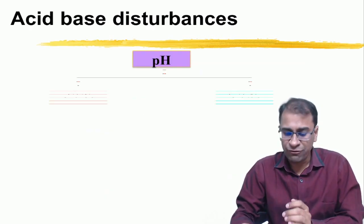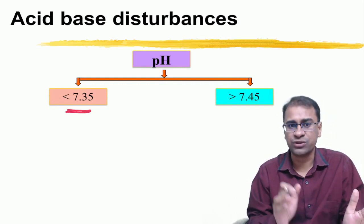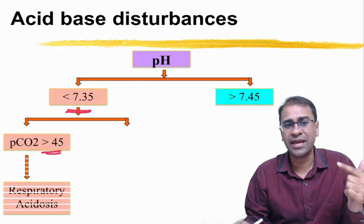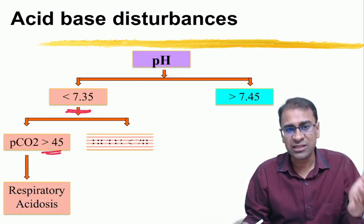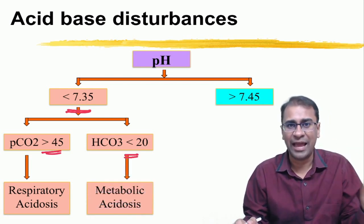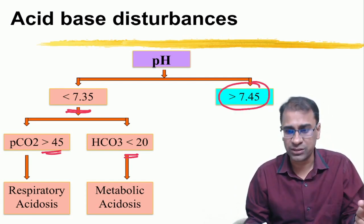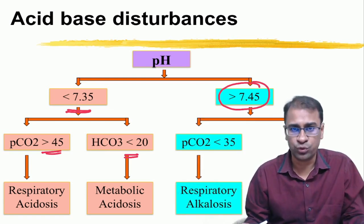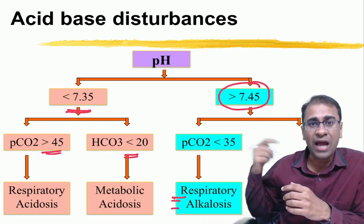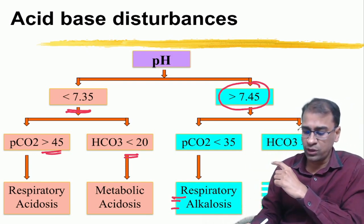If the pH is less than 7.35, you are looking at acidosis. In acidosis, look at the PCO2 — if PCO2 has risen, it is respiratory acidosis. Conversely, if bicarb is less than 20, it is a metabolic cause — metabolic acidosis. Reversely, if pH is more than 7.45, it is alkalosis. In alkalosis, if PCO2 is less than 35, it is respiratory alkalosis. If bicarb is more than 24, it is metabolic alkalosis.